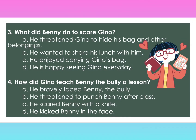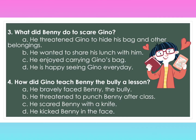Number three: What did Benny do to scare Gino? A. He threatened Gino to hide his bag and other belongings. B. He wanted to share his lunch with him. C. He enjoyed carrying Gino's bag. D. He is happy seeing Gino everyday. Number four: How did Gino teach Benny the bully a lesson? A. He bravely faced Benny the bully. B. He threatened to punch Benny after class. C. He scared Benny with a knife. D. He kicked Benny in the face.